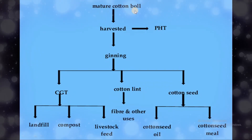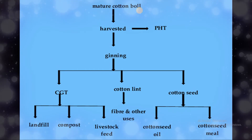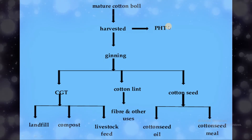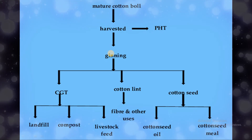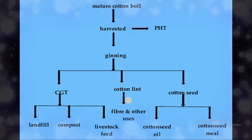The mature cotton boll is harvested after the fruit ripens. Post-harvest trash (PHT) refers to material not required, which is discarded. The bolls are taken to the ginning press, where the cotton lint is the important output used for fiber and cloth preparation.